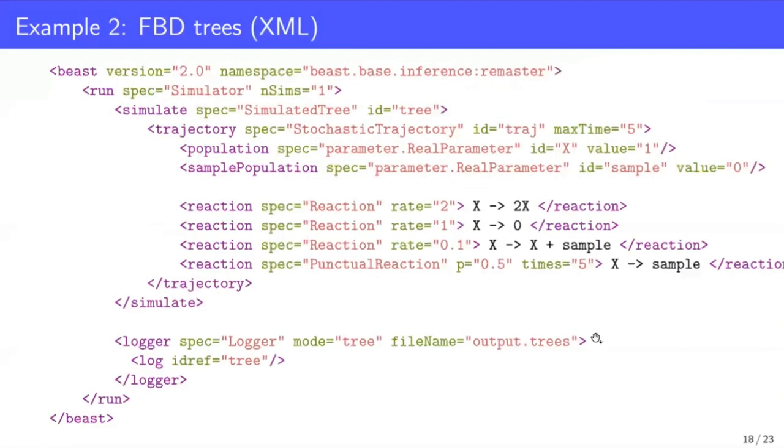So this is what the XML depiction of this model might look like. Again, we see exactly the same things we saw on the previous slide. The only difference here with the trajectory simulation in the last example is that we've wrapped the whole simulation element in this simulated tree element. And we're also outputting a tree file rather than a trajectory file.